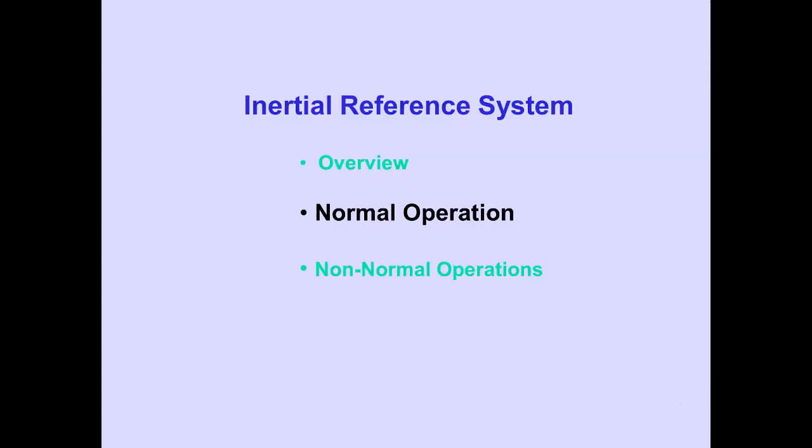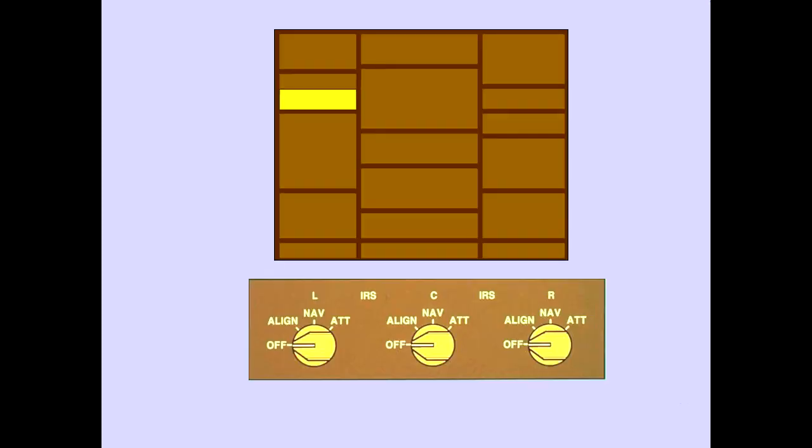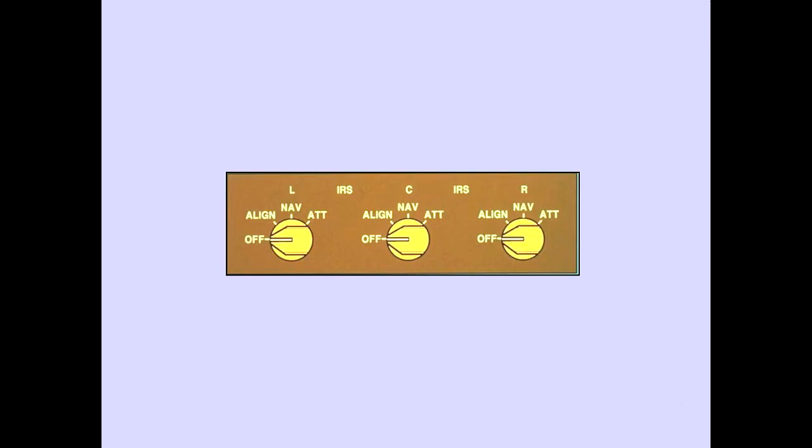Now let's look at normal operation of the IRS. The IRS controls are located on the overhead panel. Normally, only the off position and nav position are used. Align and attitude positions will be discussed later in this module.